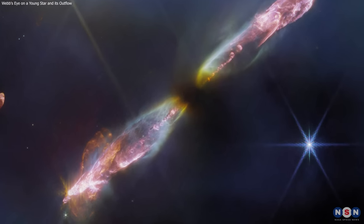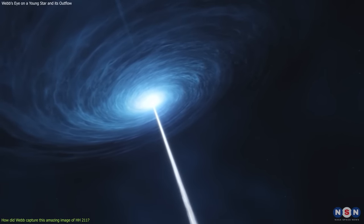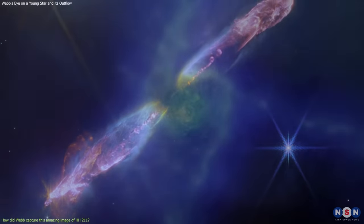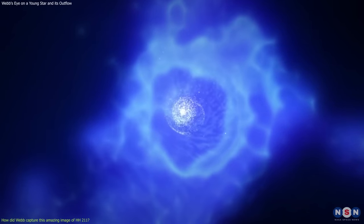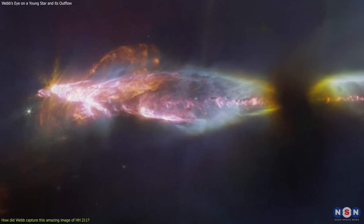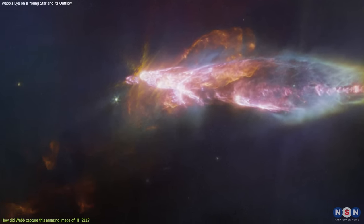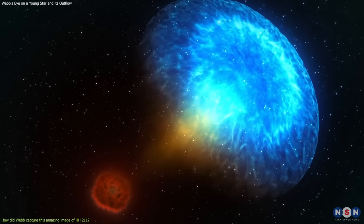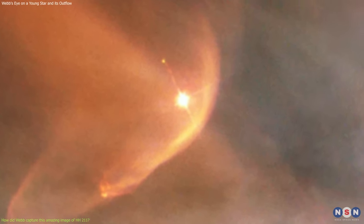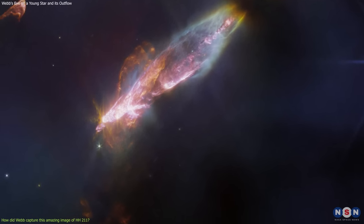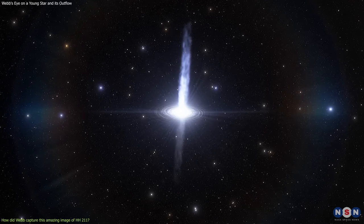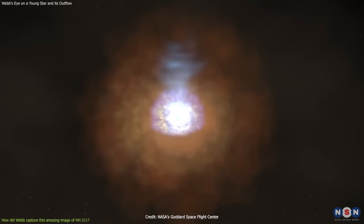The results are very exciting and surprising, as they reveal new aspects of the outflow physics that were not known before. The results also confirm or challenge some of the existing theories and models of star formation and outflow physics. One of the main findings is that the jet and the bow shocks have different temperatures and velocities along their length. The jet is cooler and faster near the star, where it is launched, and it becomes hotter and slower farther away, where it interacts with the medium. The bow shocks are hotter and slower near the star, where they are stronger, and they become cooler and faster farther away, where they are weaker. This shows that there is a complex exchange of energy and momentum between the jet and the bow shocks as they travel away from the star.